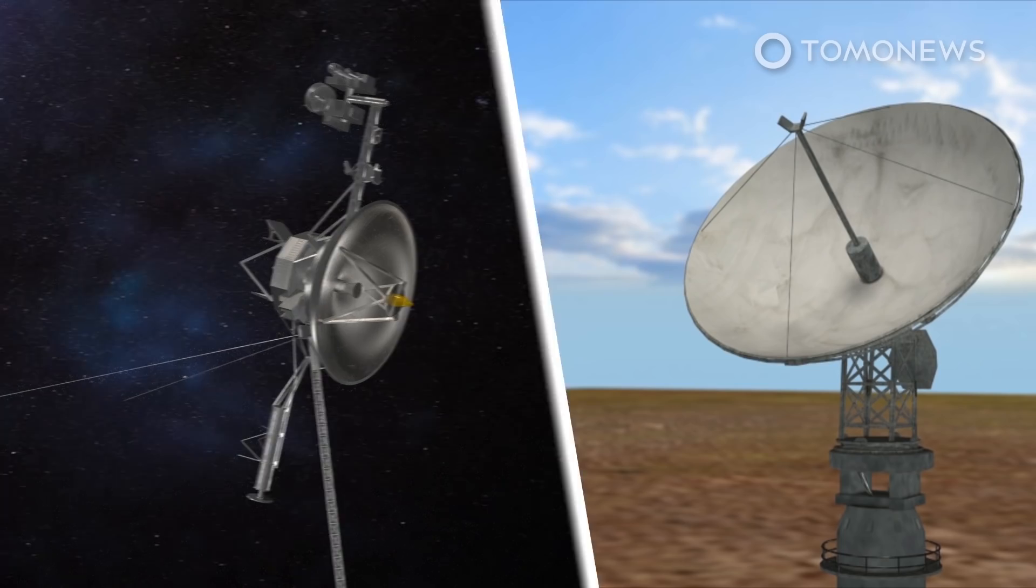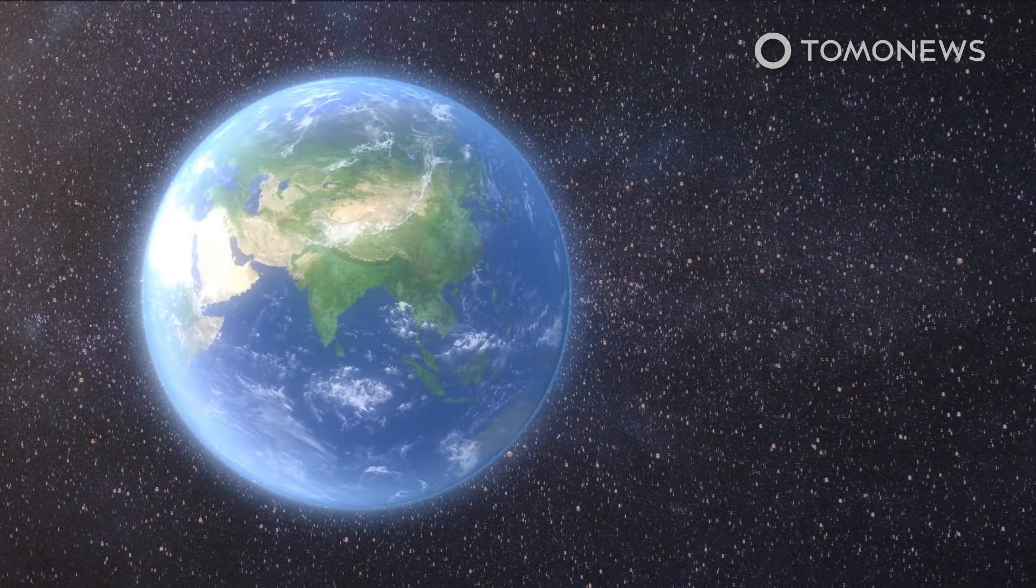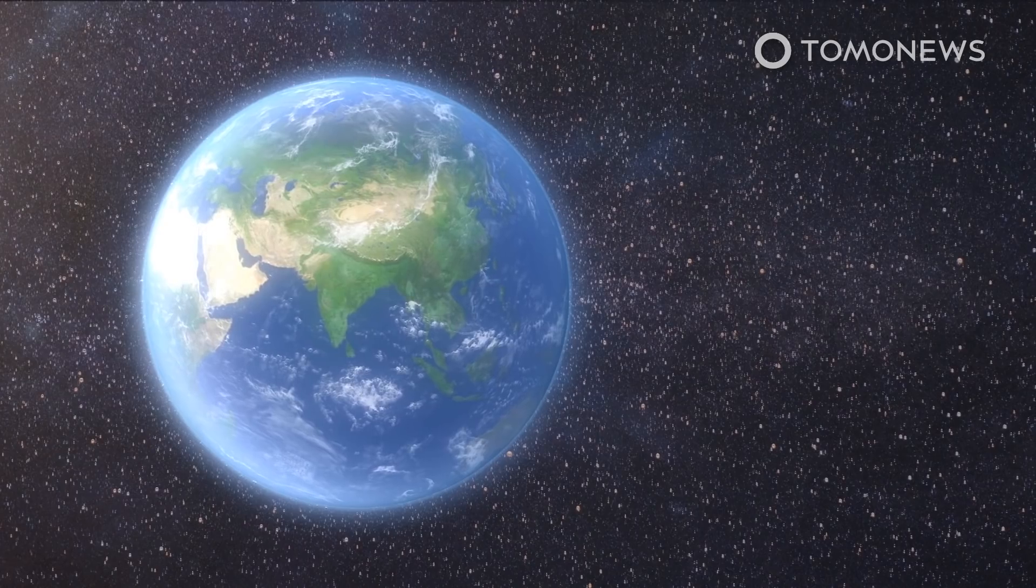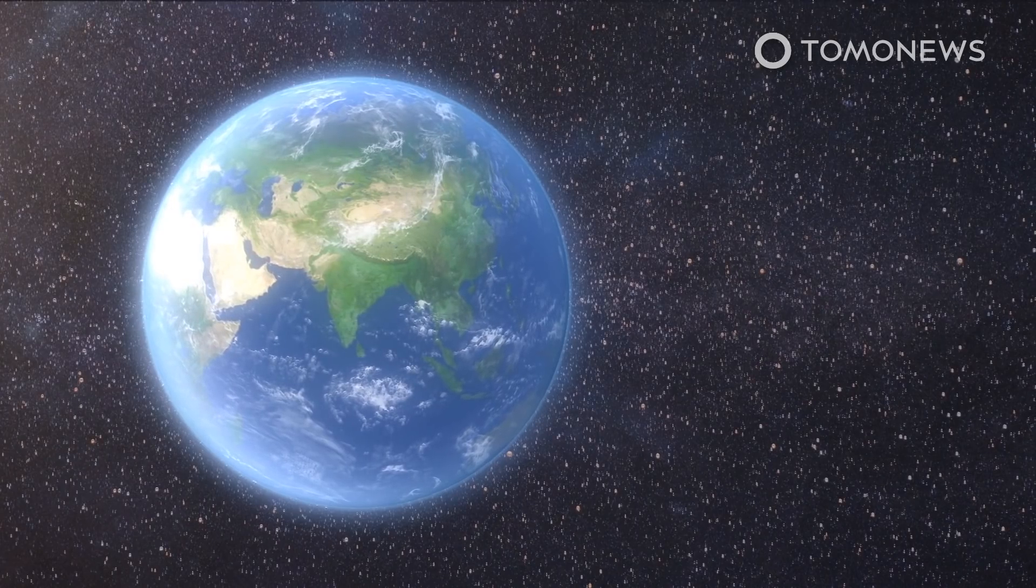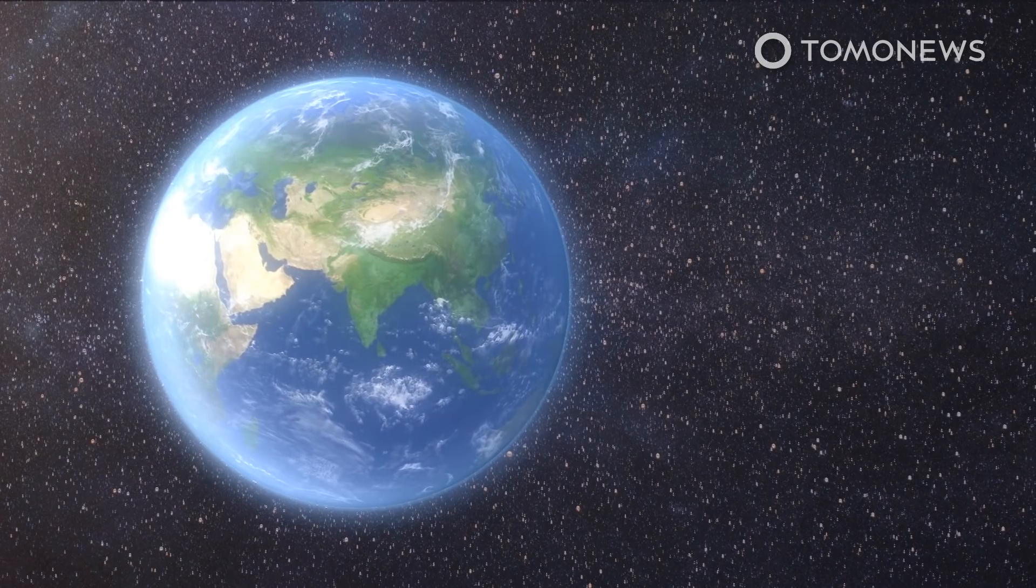As Voyager 2 travels in space, the radio antenna won't be able to send commands to the space probe while it's being updated. The spacecraft is currently flying in a downward direction relative to our planet's orbital plane, which means it can only be in contact with the radio antenna site in Australia.